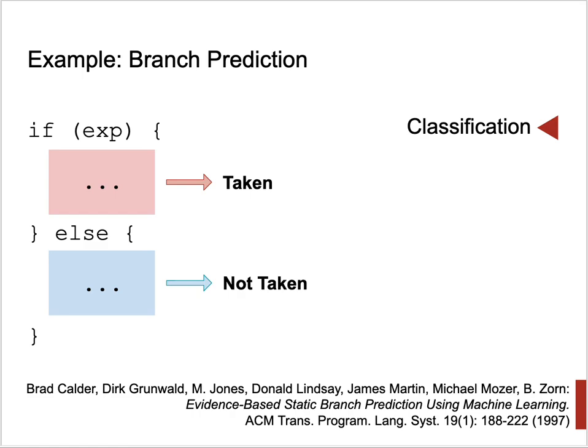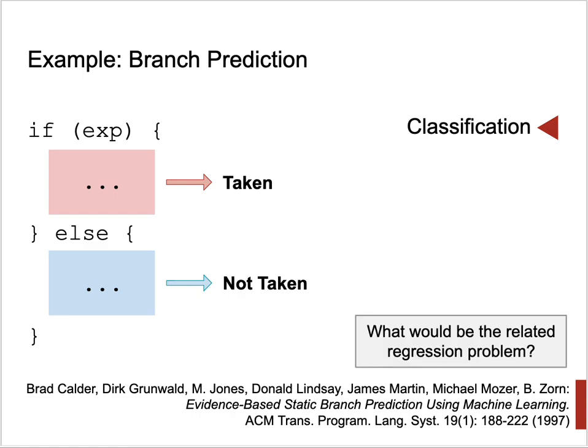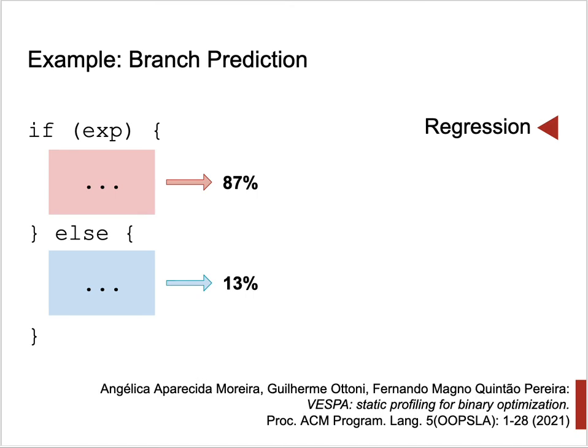You can learn more about that technique by reading Calder's paper. The corresponding regression problem would be to predict the probability that a branch is taken — that's the technique discussed by Angelica Morader in her paper.